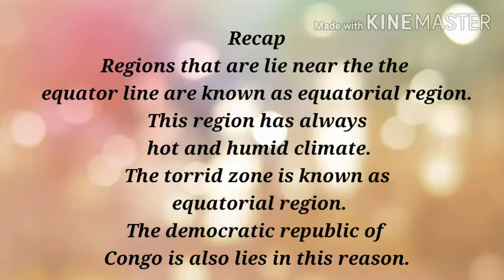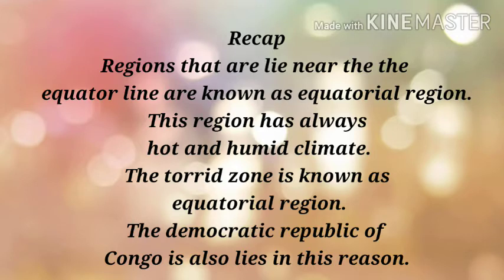Regions that lie near the equator are known as the equatorial region. Equator line के पास पड़ने वाले जितने भी क्षेत्र हैं, उन्हें हम equatorial region के नाम से जानते हैं। These regions always have a hot and humid climate. The torrid zone is also known as the equatorial region. The Democratic Republic of Congo also lies in this region.